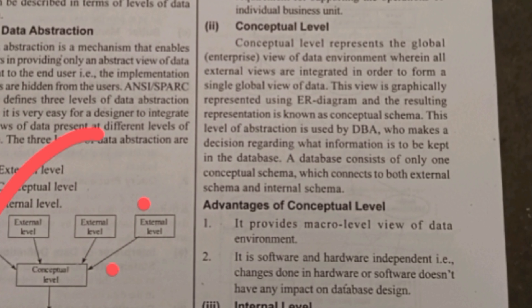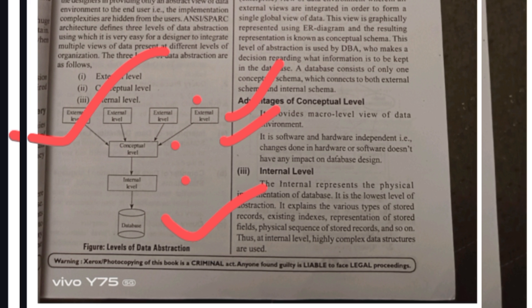The next level is the Conceptual Level, which represents the global view of the data environment within external views. For example, in a college database, the principal can view student data and management data. A student has no access to see any data except their own student data, and faculty cannot access principal data. The Conceptual Level is a macro level — a big level — of the data environment.